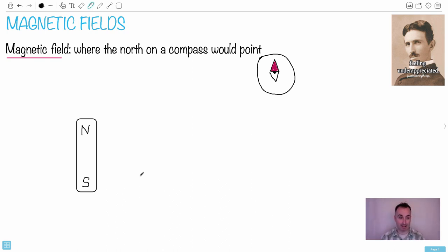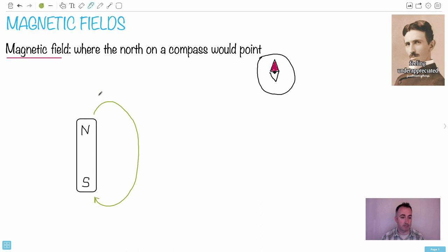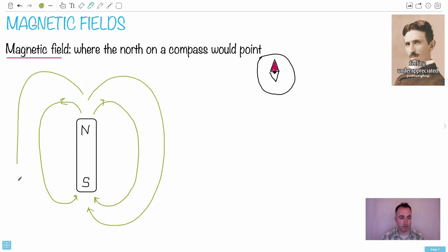Imagine you have a bar magnet. If I place my little compass near the north end, since north repels north, it will point away from the north. But if I place the compass near the south end, it will be attracted to the south. So I can draw magnetic field lines going out like that, and then out like this. You can draw more and more lines — as many as you like. It looks kind of like an apple core.